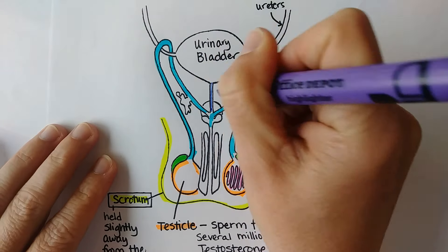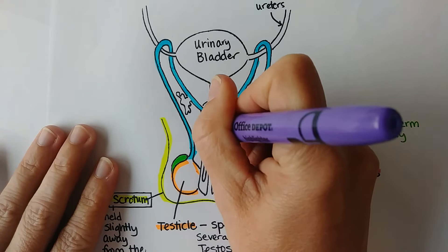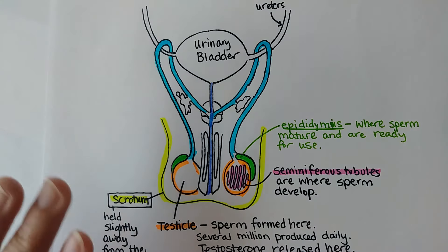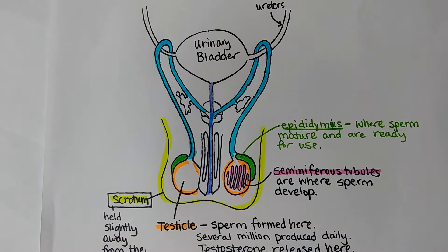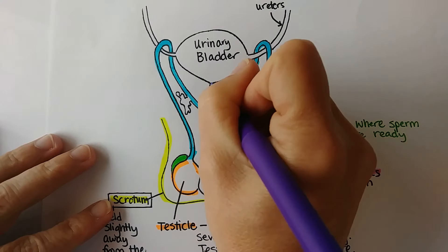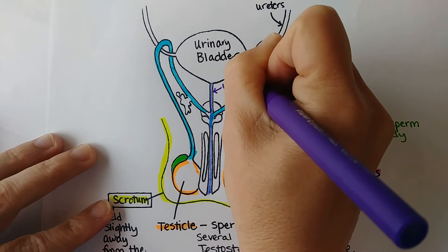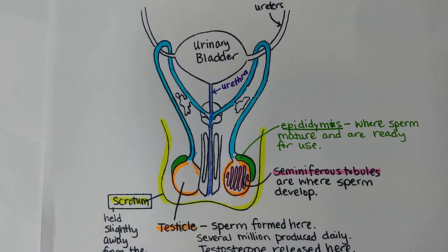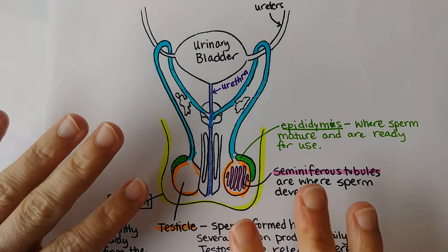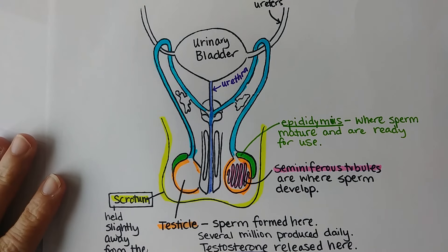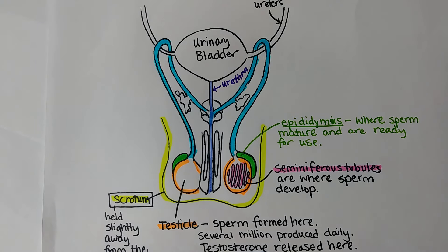The urethra starts up at the bladder and then goes out of the body through the penis. The next structures to discuss are the different glands that add secretions to the sperm to make sure they can function properly.